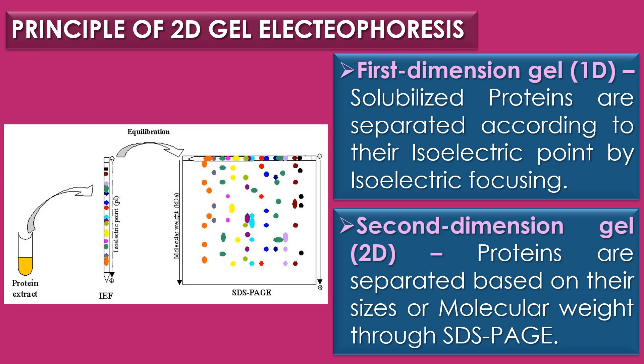The principle of 2D gel electrophoresis: two-dimensional gel electrophoresis is the combination of two high-resolution electrophoretic procedures — isoelectric focusing and SDS-polyacrylamide gel electrophoresis. The main aim of 2D gel electrophoresis is to provide much greater resolution than either procedure alone.